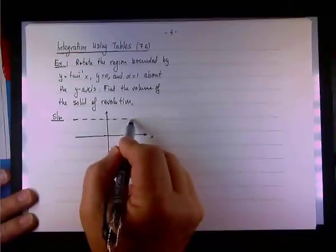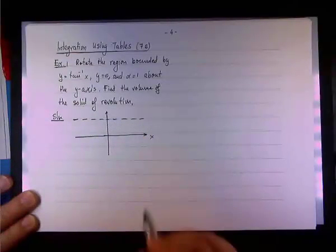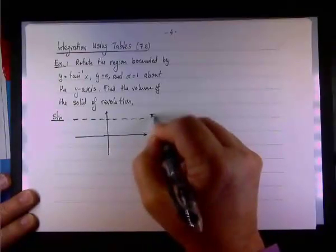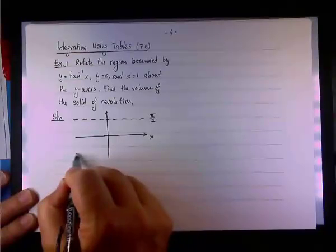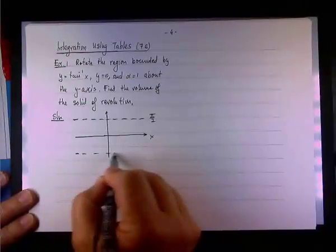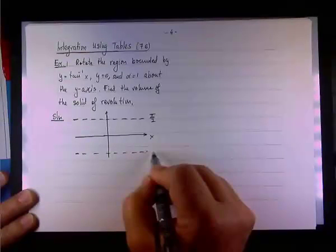Remember, the tangent has a vertical asymptote. The inverse tangent, being the inverse, has a horizontal asymptote at either pi over 2 on one side and negative pi over 2 on the other side.